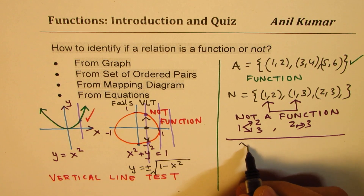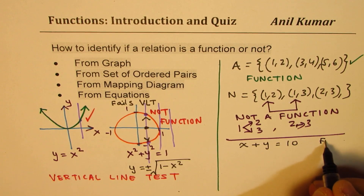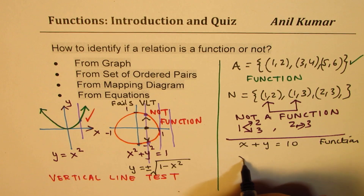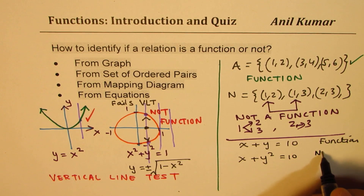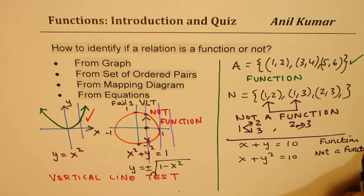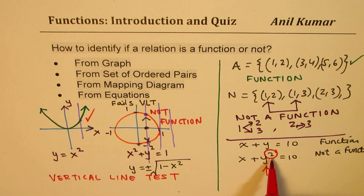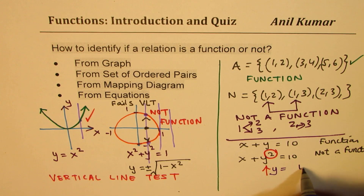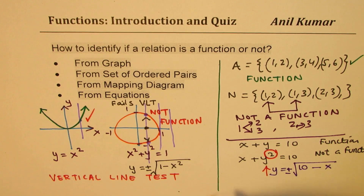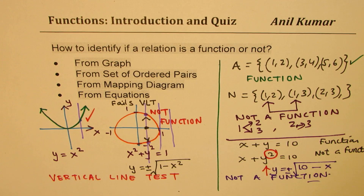For equations: x + y = 10 is a function, but x + y² = 10 is not. Isolating y in x + y² = 10 gives y = ±√(10 - x). The ± means for a given x there are two y values, so it is not a function. Whenever you see y² in an equation, that is a signal it may not be a function.